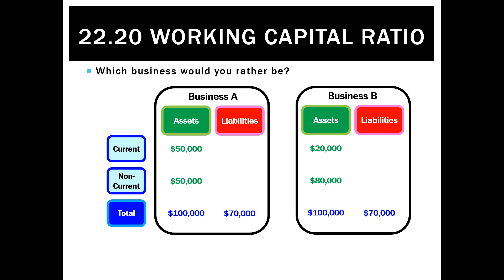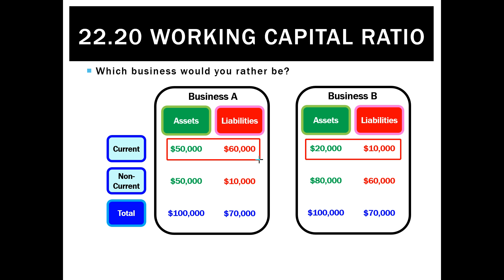So we also want to look at their liabilities. If we break down liabilities into current and non-current, we can see that business A has $60,000 of current liabilities, but business B only has $10,000. Looking at that, you'd actually rather be business B. Whilst it only has $20,000 of current assets, that's double the current liabilities due in the next 12 months. Business A had much higher current assets, but its current liabilities were actually more than that — it won't have enough current assets to pay all those current liabilities.